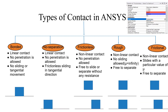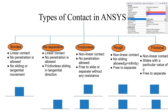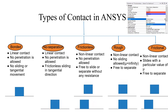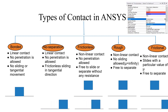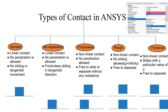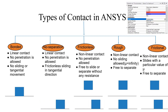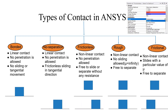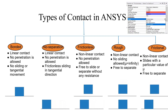For frictionless contact, it allows free sliding in the tangential direction and allows separation in the normal direction. For rough contact, there is no sliding but it is free to separate. For frictional contact, it slides with a particular value of coefficient of friction in the tangential direction and is also free to separate.